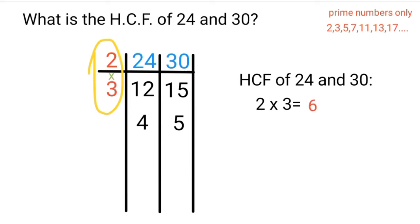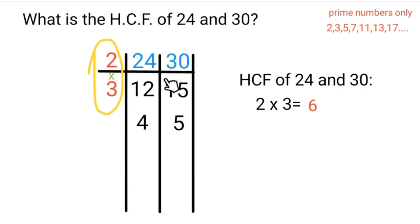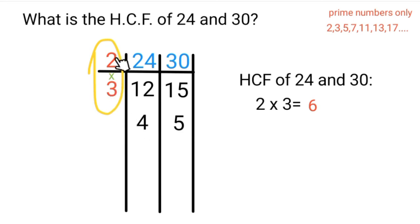We use prime factors of both numbers, and both numbers must be divisible by that prime factor. We start with the smallest, which is 2: 2 into 24 goes 12 times, 2 into 30 goes 15 times. We then move to 3: 3 into 12 goes 4 times, 3 into 15 goes 5 times. There is no other prime number that can go into 4 and 5 without leaving a remainder, so we stop the table here and multiply the prime factors we used. That is the divisor method to find the highest common factor.